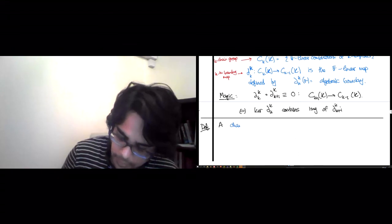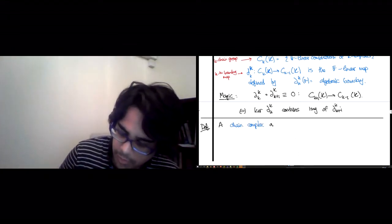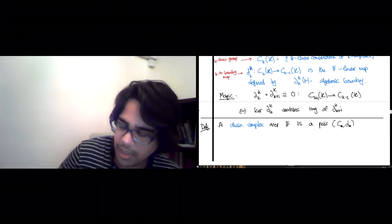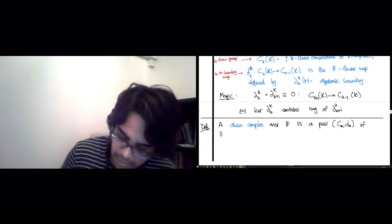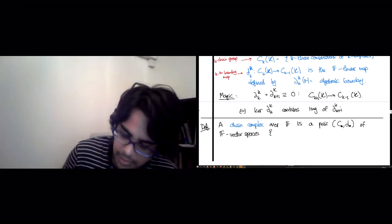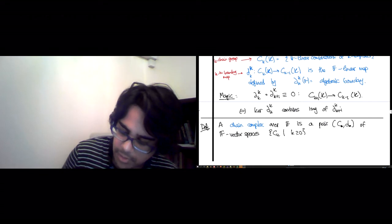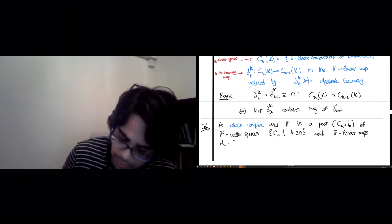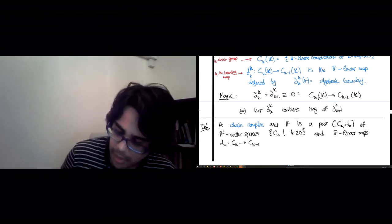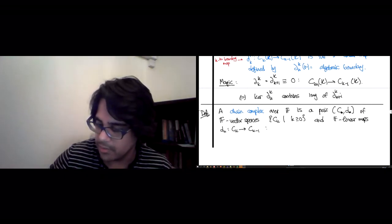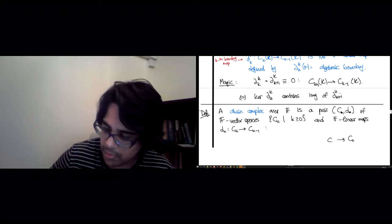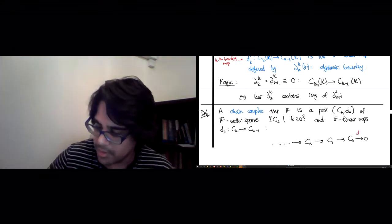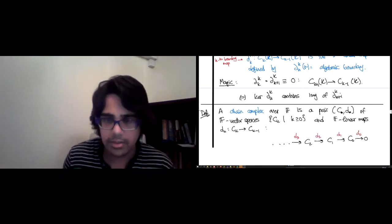A chain complex over the field F is a pair. I'll call it C bullet D bullet. And the bullets are just indices. Of vector spaces. F vector spaces. Ck for k bigger than or equal to 0. And maps. Linear maps. Dk going from Ck to 1 degree lower, Ck minus 1. So if you take all of this information, it fits into a nice ordered sequence. Where you have C0, C1, C2, and so on. And you, by convention, add 0 there. So the linear maps are, this is D0, D1, D2, D3, and so on. And you go all the way up if you like.